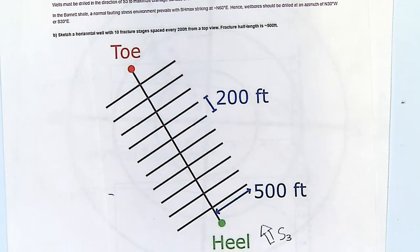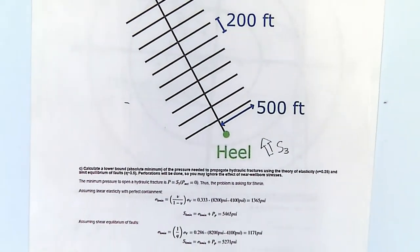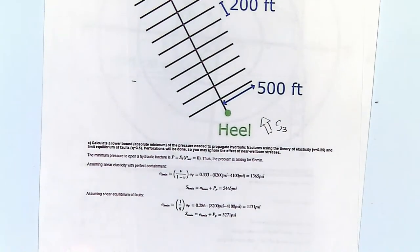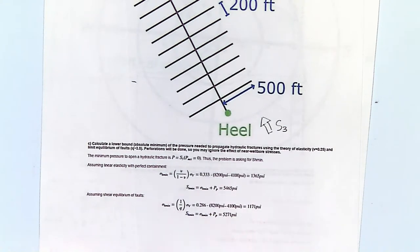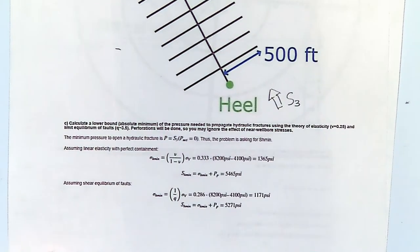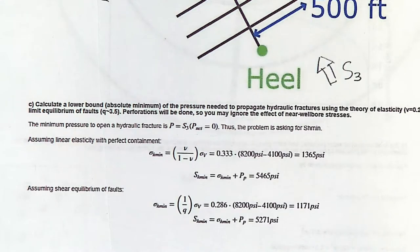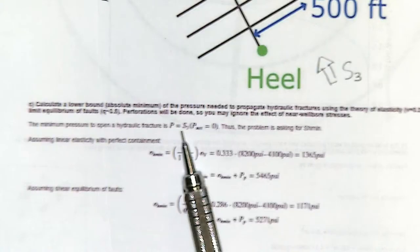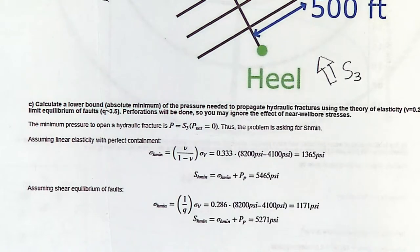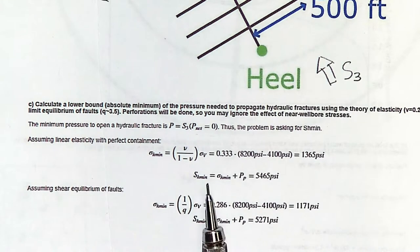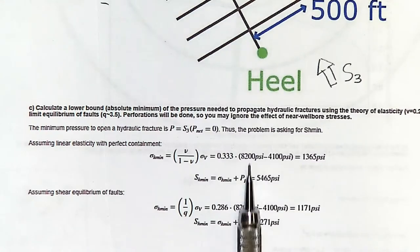The next step is to calculate the bottom hole pressure for a net pressure equal to zero. If net pressure equals zero, the pressure in the fracture equals the minimum principal stress S3. So essentially what I'm asking is just to calculate S3. If it's a horizontal stress — as in normal faulting — we already have those equations as possible solutions.